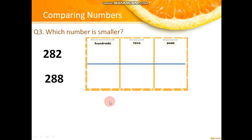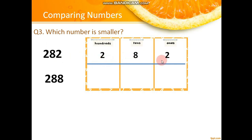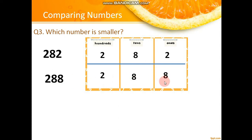Now look at the third example: which number is smaller? First, put these numbers into a place value chart. The first number is 282 — two hundreds, eight tens, and two ones. The second number is 288 — two hundreds, eight tens, and eight ones.